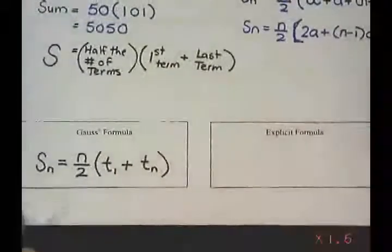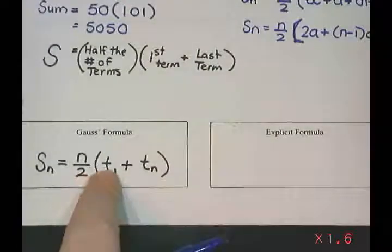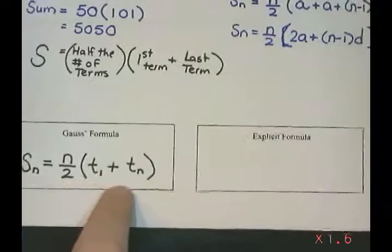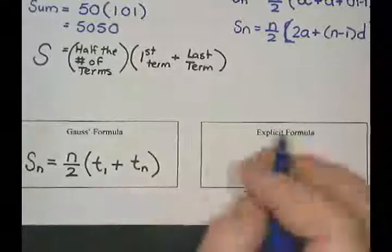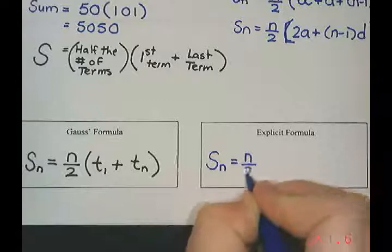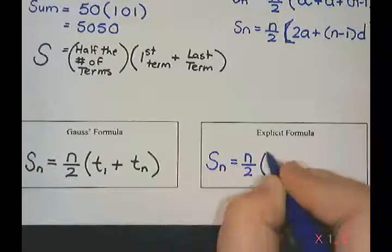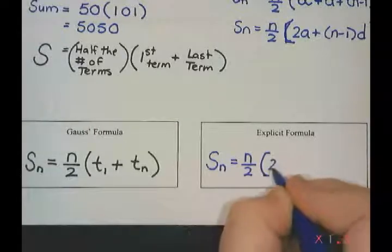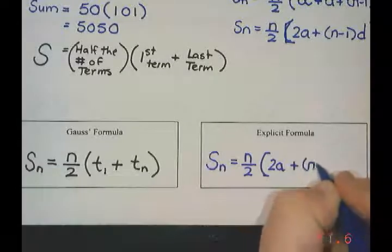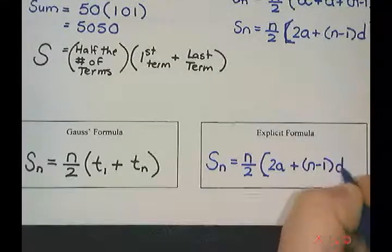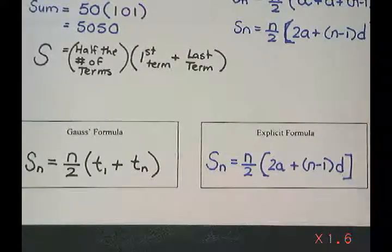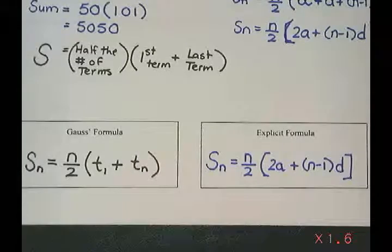One of them is to use what we call Gauss's formula, where you add the first and last term and multiply it by half the number of terms. And the other one we're going to call our explicit formula, where I say the sum is n divided by 2, so half the number of terms, times 2a, so 2 times the first term, plus n minus 1 times d, which is our common difference. So these are just the same letters that we used when we did our formula for a sequence.